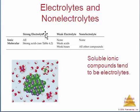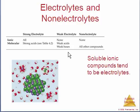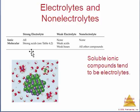Strong electrolytes are all ionic compounds, strong acids — which are listed in your textbook — as well as strong bases, although you can consider strong bases to be ionic, as we'll see in a few slides. Weak electrolytes are weak acids and weak bases. And non-electrolytes are all molecular compounds that are not acids or bases.